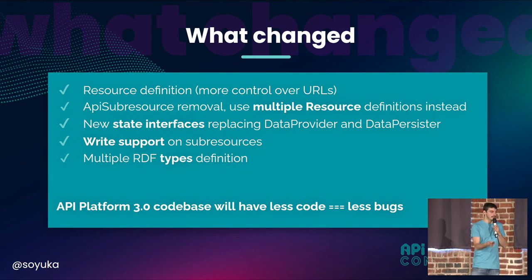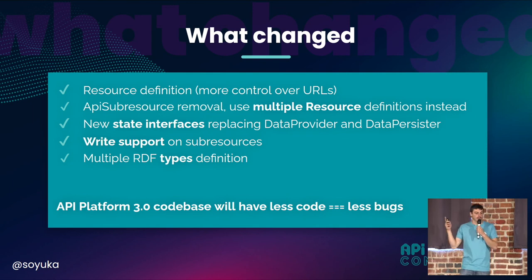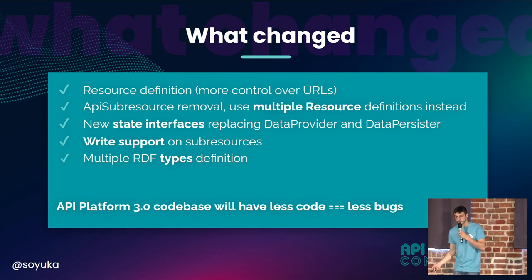We want to add write support on sub-resources. And we can now define multiple RDF types, which was not the case earlier. In the end, API Platform 3 will have less code, which means fewer bugs.